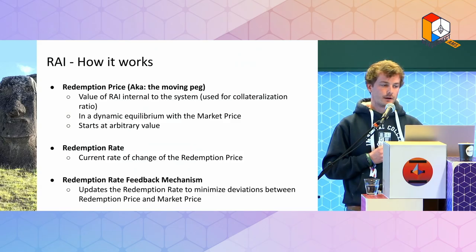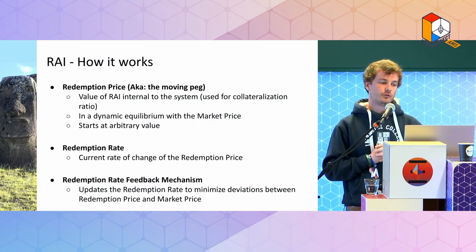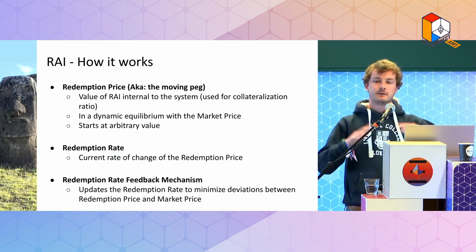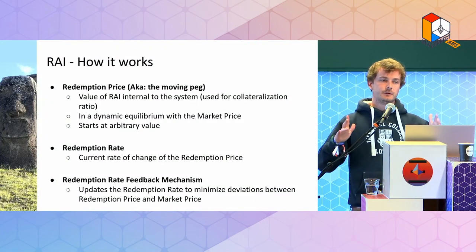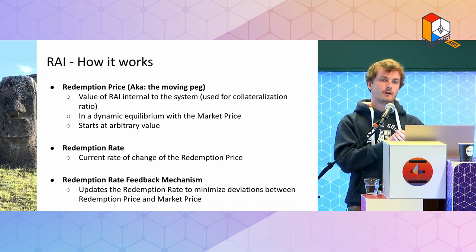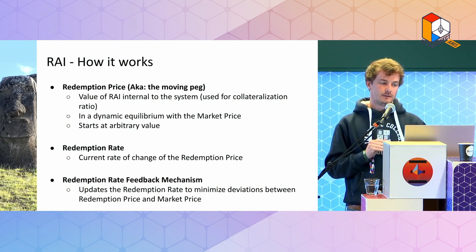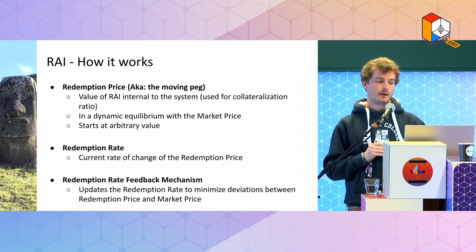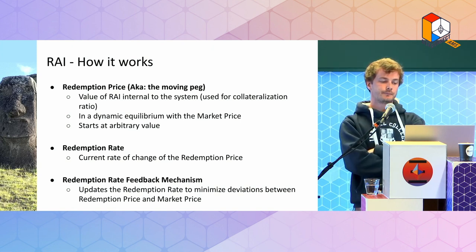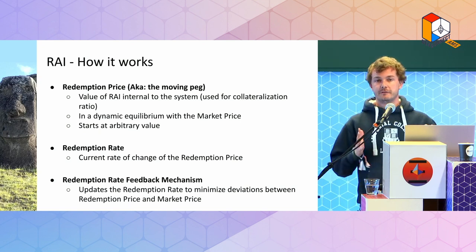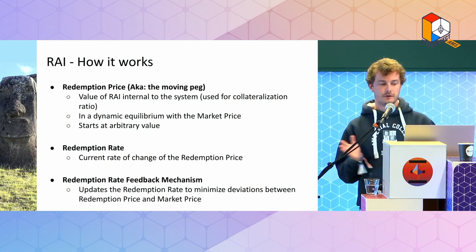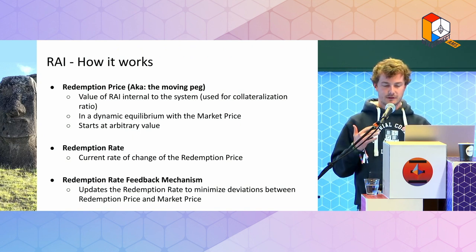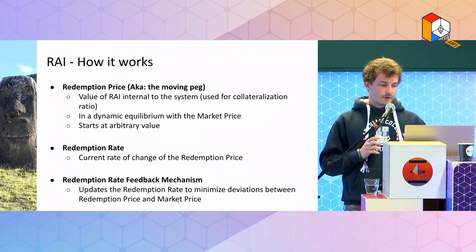Three important definitions: first, redemption price — the moving peg — which is the target value of RAI and its internal value within the system. Similar to Maker, you have vaults or CDPs that you mint RAI against ETH. The redemption price is the target price at which you mint, repay your debt, get liquidated, and so on. At equilibrium, the market price equals the redemption price. We started RAI at pi, so around 3.14, choosing that value to avoid biasing people into thinking it should stay at one.